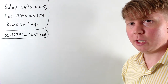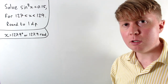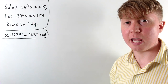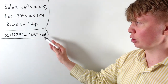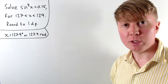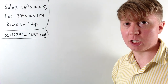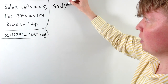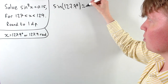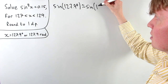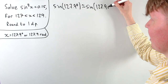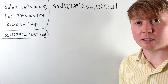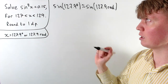So how did this work? It's not as simple as saying 127.9 degrees equals 127.9 radians — that's simply not true. But what is true is that sine of 127.9 degrees is approximately equal to sine of 127.9 radians, and they're close enough that when we round to one decimal place, we get the same solution to this equation.